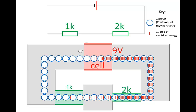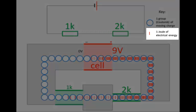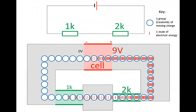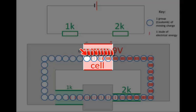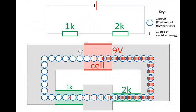Notice that some of these blue circles have red lines and some of them don't. Some of them have many red lines and some of them have fewer. Each red line stands for a joule of electrical energy. Notice that as these groups of moving charge move through the cell, they are given energy. The cell gives the moving charge energy — that's what moves the charge.